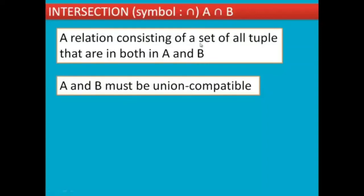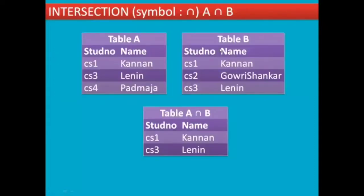INTERSECTION symbol is A intersect B. A relation consisting of a set of all tuples that are in both A and B. A and B must be union compatible. For example, table A and table B, the common values are CS1 and CS3. So the intersection produces CS1 with student name and CS3 Linen. Table A intersection B shows student names where CS1 and CS3 are common.